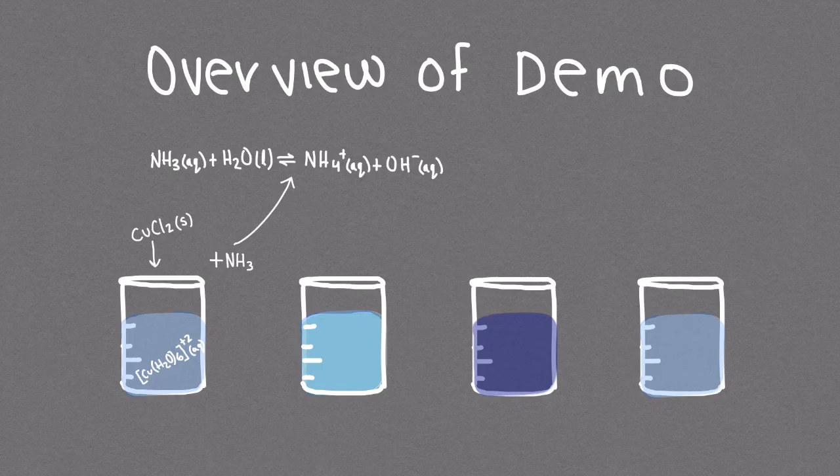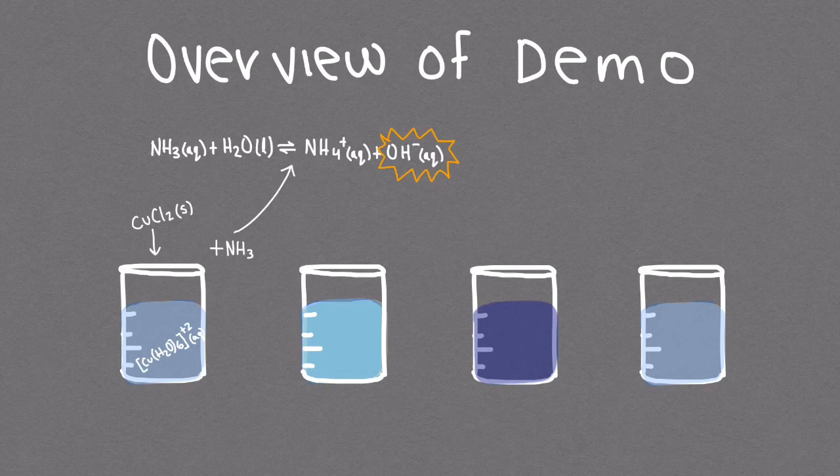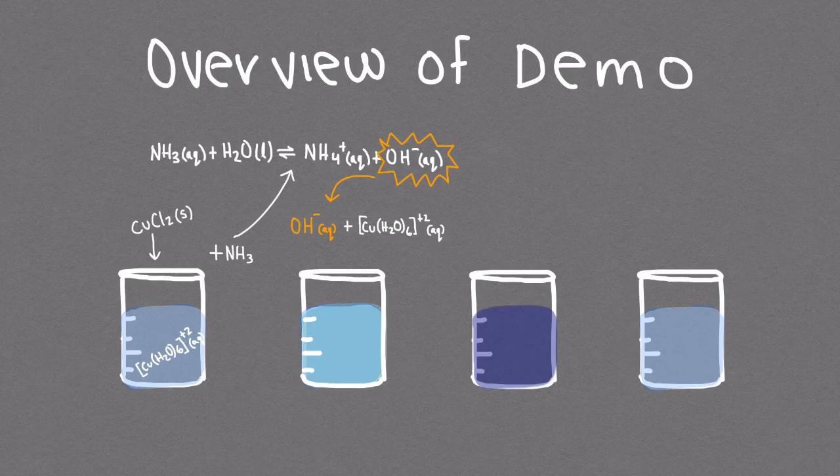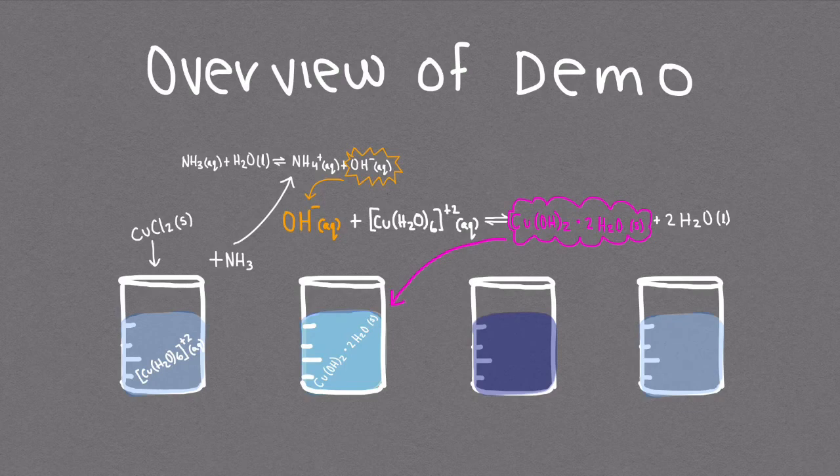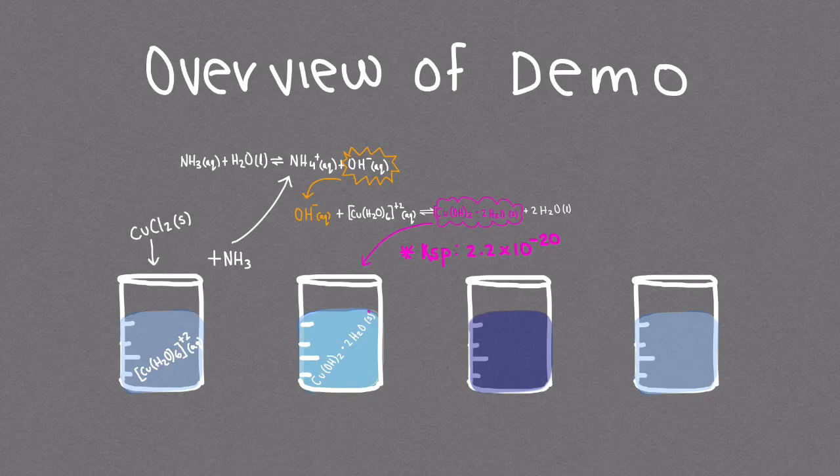Ammonia is then added to the solution and since ammonia is a weak base it forms OH- or hydroxide ions in the solution. The hydroxide ions then react with Cu(H2O)6 plus 2 ions forming copper hydroxide. The copper hydroxide precipitates out making the solution look slightly cloudy. It is not fully insoluble but has a KSP of 2.2 times 10 to the negative 20th making it effectively insoluble.